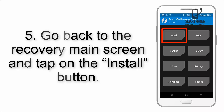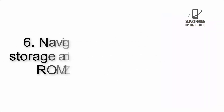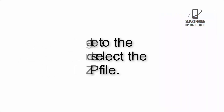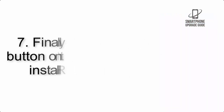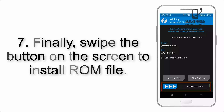Step 4: Swipe the button to wipe the device. Step 5: Go back to the recovery main screen and tap on the Install button. Step 6: Navigate to the storage package and select the ROM zip file. Step 7: Finally, swipe the button on the screen to install the ROM file.